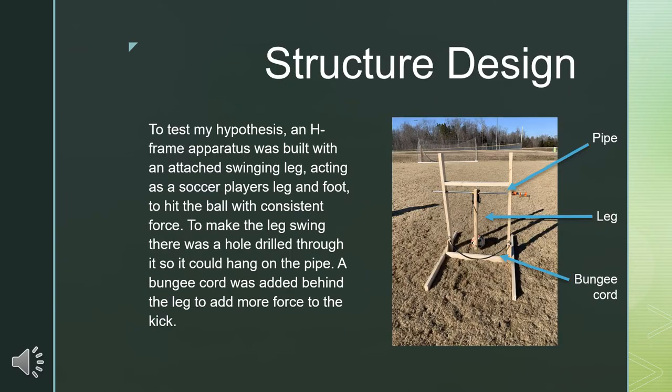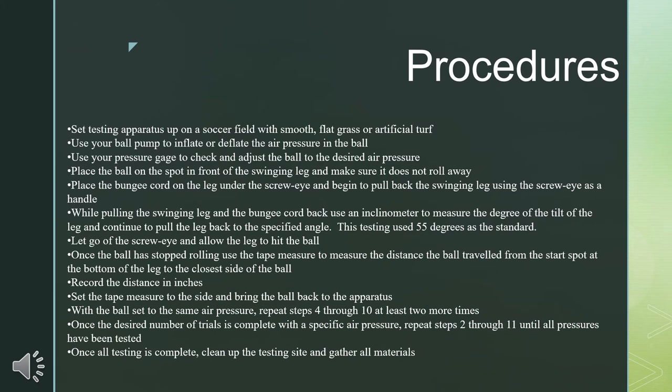To test this hypothesis, as you can see on the right, an H-frame apparatus was built with an attached swinging leg acting as a soccer player's leg and foot to hit the ball at a consistent force. To make the leg swing, there was a hole drilled through it so it could hang from the pipe across the top. A bungee cord was added behind the leg to add more force to the kick. Once the testing apparatus was set up, the ball pump and pressure gauge were used to check and adjust the inflation pressure inside the ball.